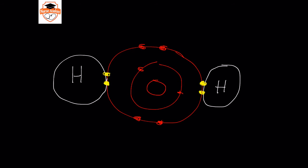By sharing electrons, hydrogen manages to fill its outer energy level, which holds two electrons. Hydrogen is one square from the end of its row on the periodic table, so it needs just one more electron to complete its valence shell. Oxygen has six valence electrons and is two electrons away from a full outer shell. Through this sharing it achieves eight valence electrons. In a covalent compound electrons are shared, whereas in an ionic compound electrons are actually transferred from one element to the other.